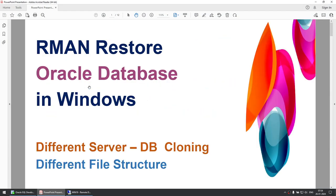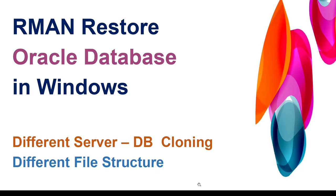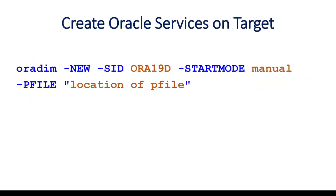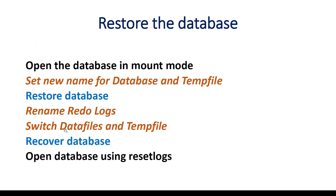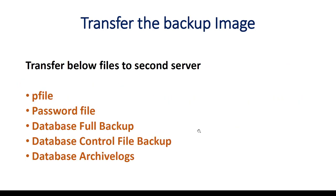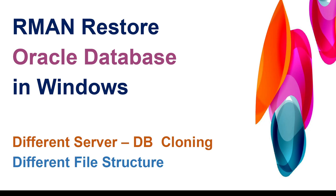This was a tutorial on how to restore an Oracle database from one server to another — DB cloning when the server file structure doesn't match. We also restored from Windows 2016 to Windows 2019, effectively upgrading the OS. The key commands to remember are: set new name, rename redo logs, switch datafiles, and switch tempfile. I hope this tutorial was useful and will help you in your work environment. Thank you for watching — see you in the next tutorial!